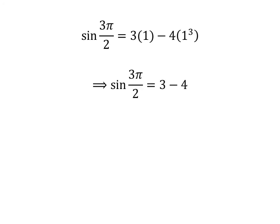As 3 times 1 equals 3 and 4 times 1³ equals 4, sin(3π/2) = 3 - 4. Since 3 - 4 equals -1, sin(3π/2) = -1.